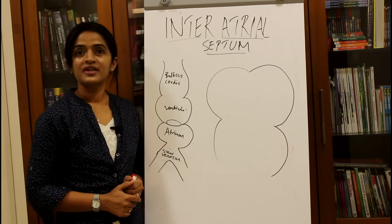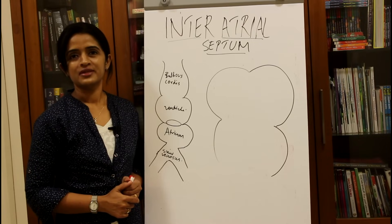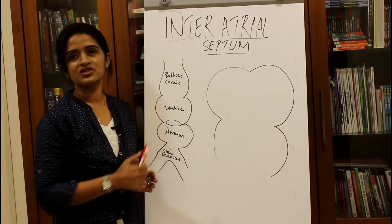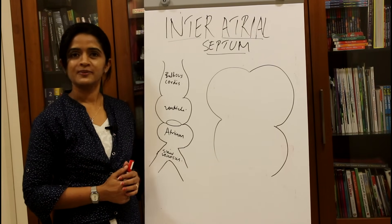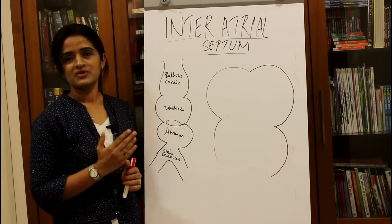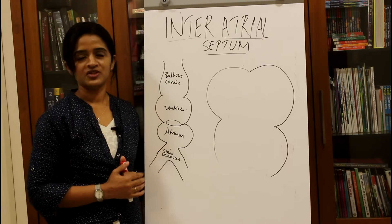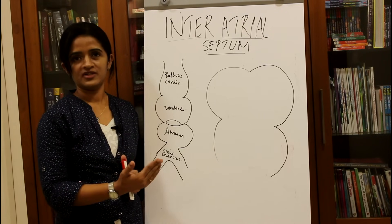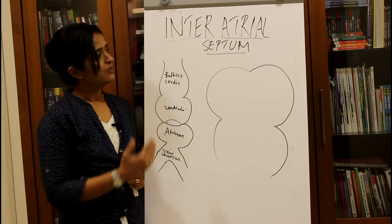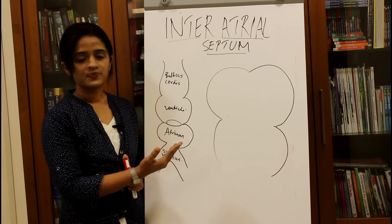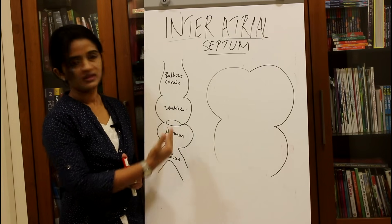Let's see the formation of the inter-atrial septum. By the word meaning, inter-atrial septum means the septum which is lying between the two atria — right and left atria. Before moving on directly into the topic, let's see the heart tube and how it looks.